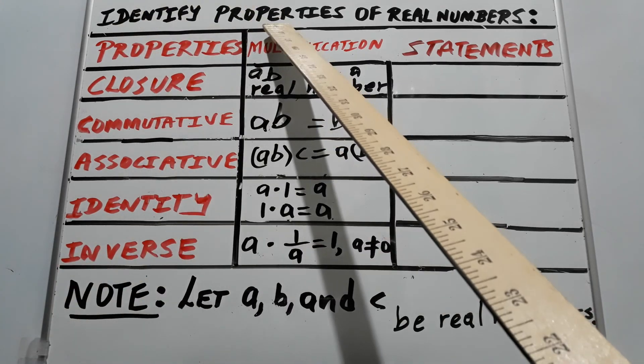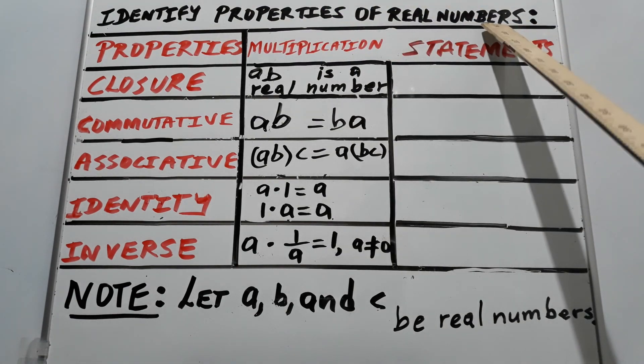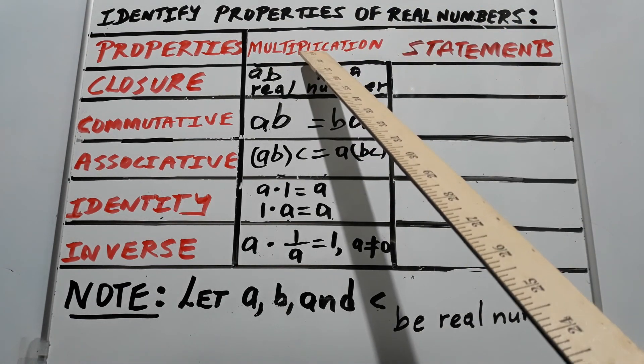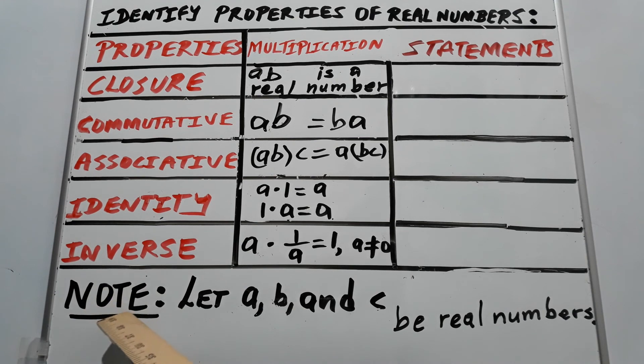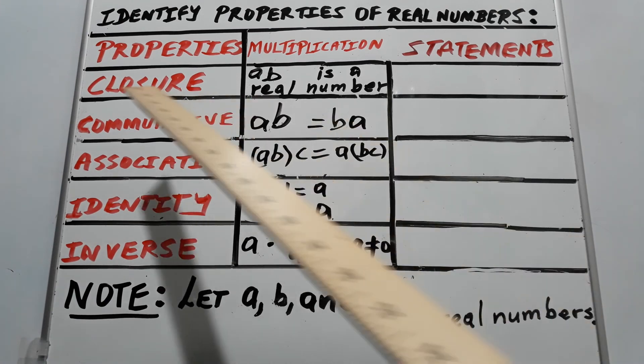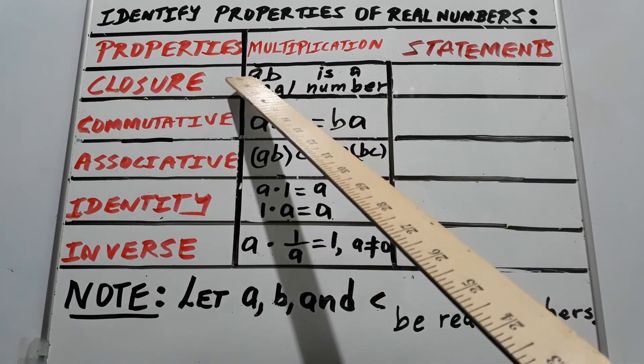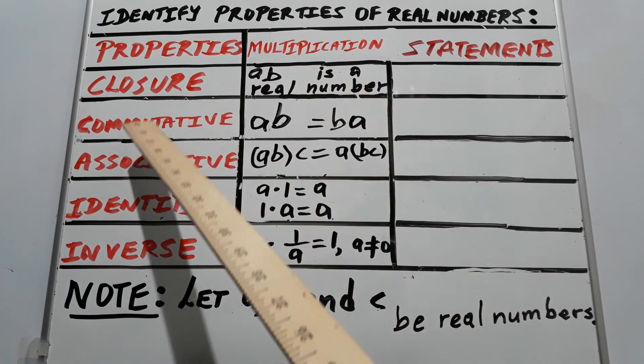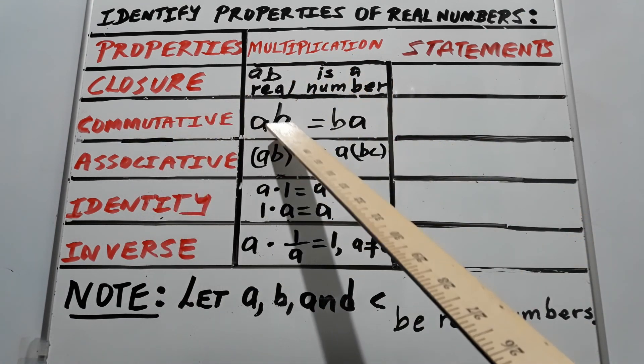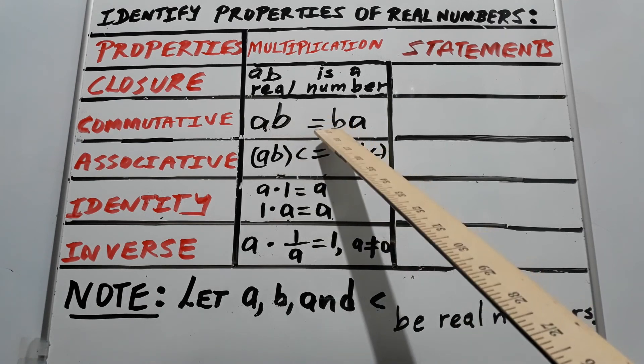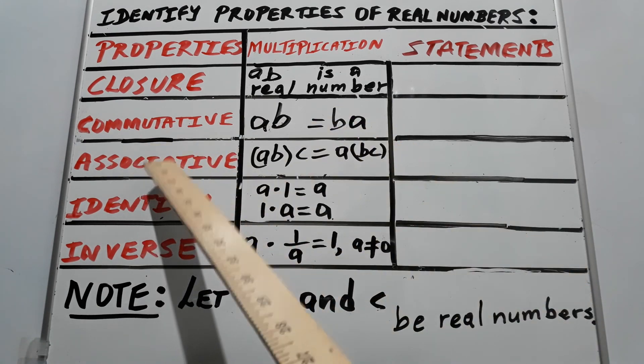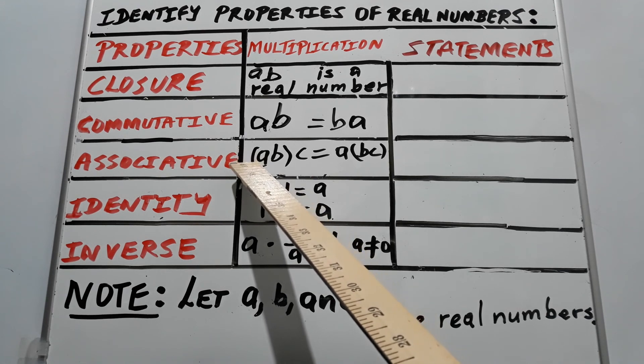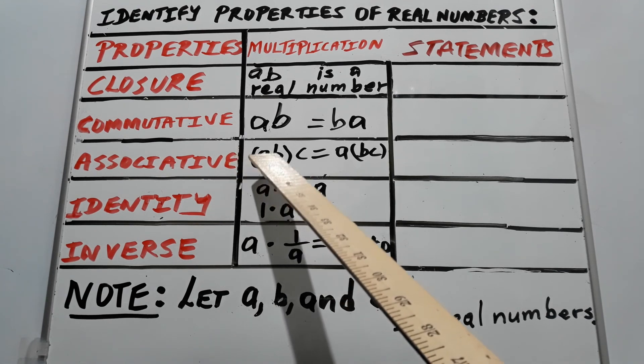Identify properties of real numbers multiplication. Let's note that a, b, and c be real numbers. Closure: a times b is a real number. Commutative: a times b equals b times a.